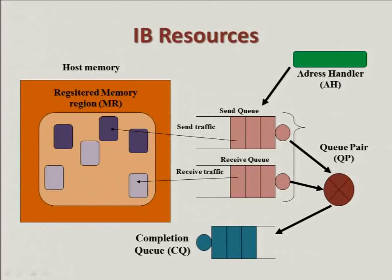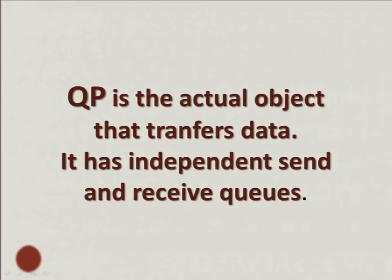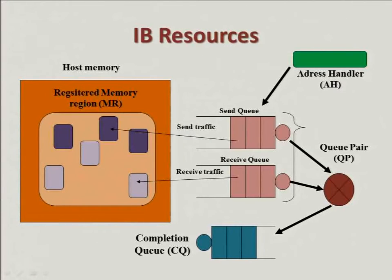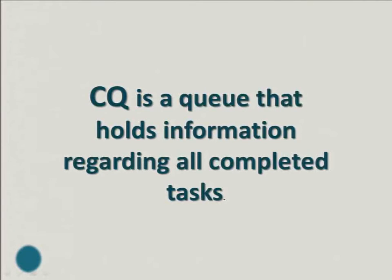A little bit about InfiniBand resources. The QP is the actual object that transfers data. It has independent send and receive queues. Whenever I want to send a packet, I put it on the send queue, and whenever I want to receive a packet I use the receive queue. Next is a completion queue, also called CQ — a queue that holds information regarding all completed tasks. Whenever the hardware finishes with a task I gave it, it lets me know on the completion queue. I poll it and then I can know if the task was successful, and if not, what was the error.